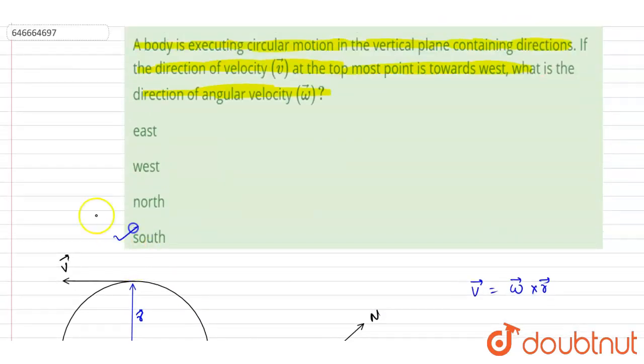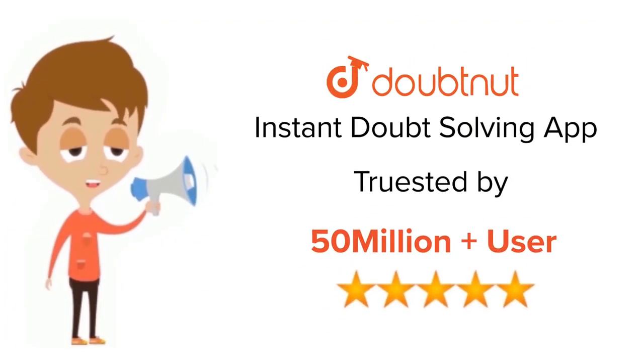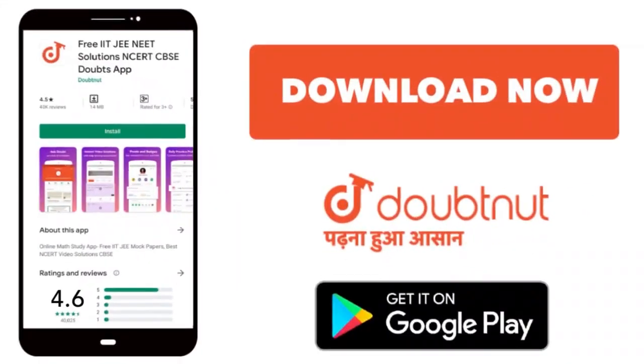So if you see here, the south, D is the correct answer. Thank you. For class 6 to 12, IIT-JEE, and NEET level, trusted by more than 5 crore students, download Doubtnut app today.